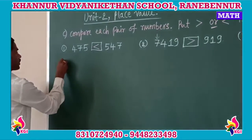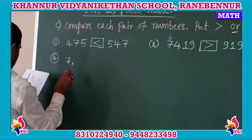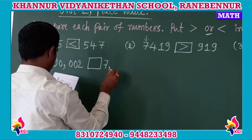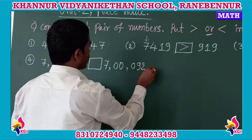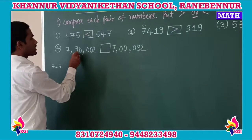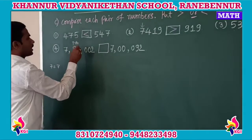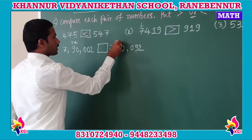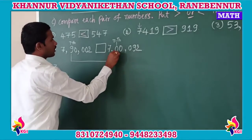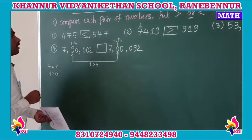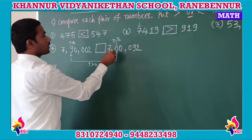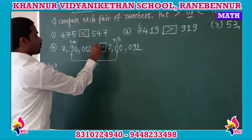The fourth pair involves two numbers starting with 7. Comparing digit by digit: 7 equals 7, then we check the ten-thousands place — in the first number 9 is there and in the second number 0 is there. Since 9 is greater than 0, the first number 7,90,002 is greater than the second number. We place the greater-than symbol in the box.